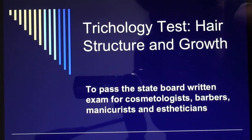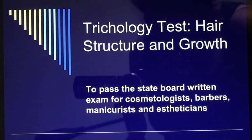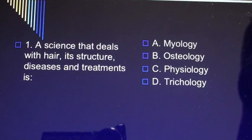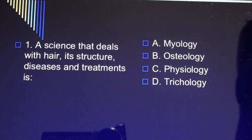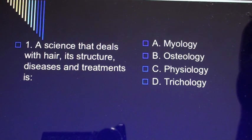Trichology test: hair structure and growth, to pass the state board written exam for cosmetologists, barbers, manicurists, and estheticians. Question 1: A science that deals with hair, its structure, diseases, and treatments is A) myology, B) osteology, C) physiology, D) trichology.